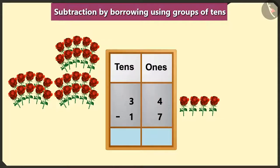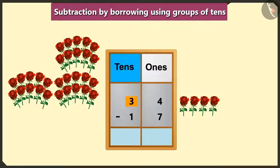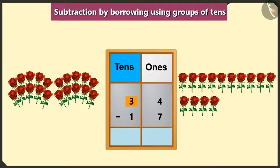Hmm, but here we cannot subtract 7 from 4 in the box of ones. So, we will borrow 1 ten from 3 tens in the box of tens. Yes, so now we will write 14 ones instead of 4 in the box of ones and 2 tens instead of 3 tens in the box of tens.